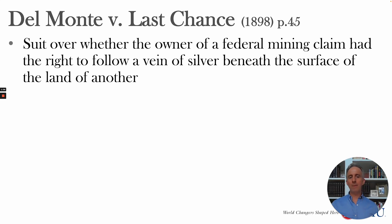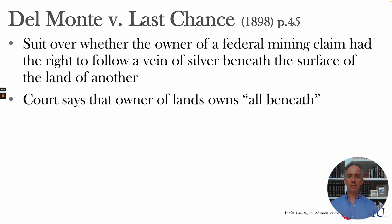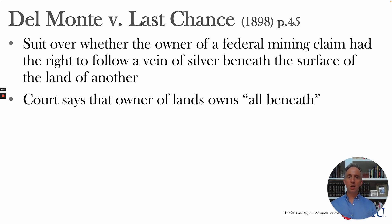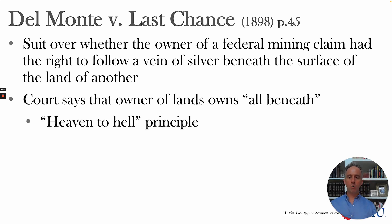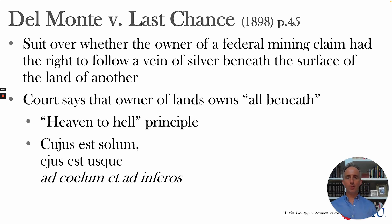This is a suit about whether the owner of a federal mining claim had the right to follow a vein of silver beneath the surface of another's land. We're using it because the court explains that the owner of the surface, by default, owns all land beneath. We'll see that they can sell that land as well, but the default is if you own the surface, you own all that land beneath. That is sometimes called the Heaven to Hell Principle.